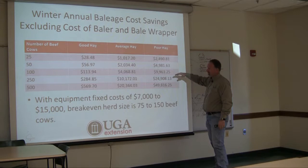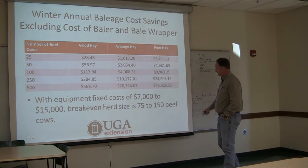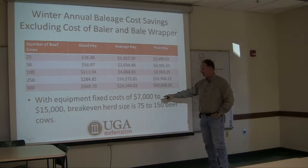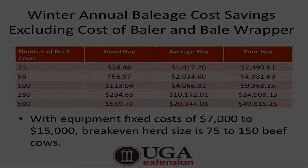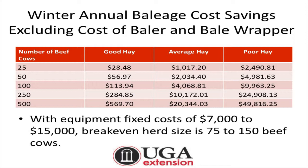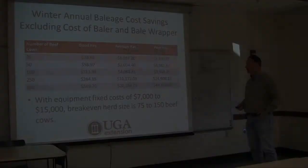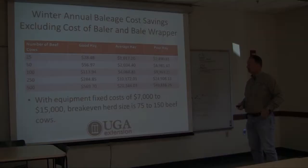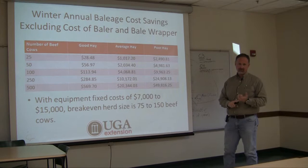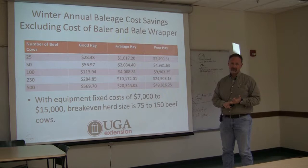When you factor in the cost of equipment — whether you already have a compatible baler and just need a wrapper, or need to buy both — annualized costs run from $7,000 to $15,000. Subtracting that cost, the break-even point for winter annual baleage falls somewhere between 75 and 150 beef cows, depending on the hay quality you're putting up and what additional equipment you need to purchase. So to summarize: justifying baleage purely on storage losses won't work; bermudagrass alone probably won't work; but higher quality winter annuals can be a game changer.